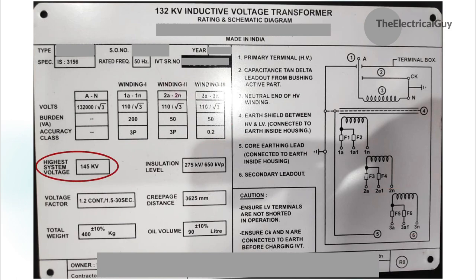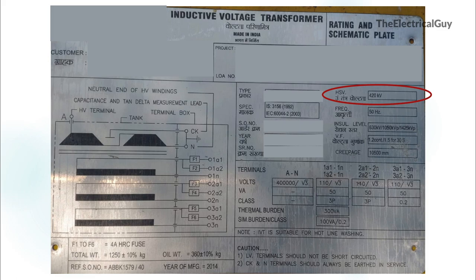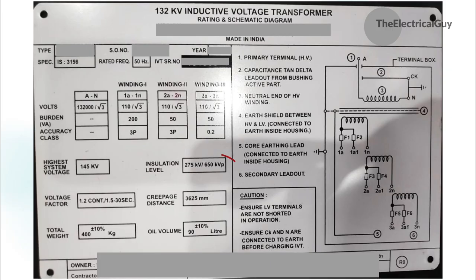Moving on, the highest system voltage or HSV is 145kV. This is the voltage which can be sustained in the system at any time and at any point. You may ask what is 132kV — well, 132kV is the nominal system voltage for which the system is designed. This is where most people get confused: 145kV is the highest system voltage and 132kV is the nominal or normal system voltage. Similarly, on other nameplates, 36kV is HSV and 33kV is nominal; 420kV is HSV and 400kV is nominal.